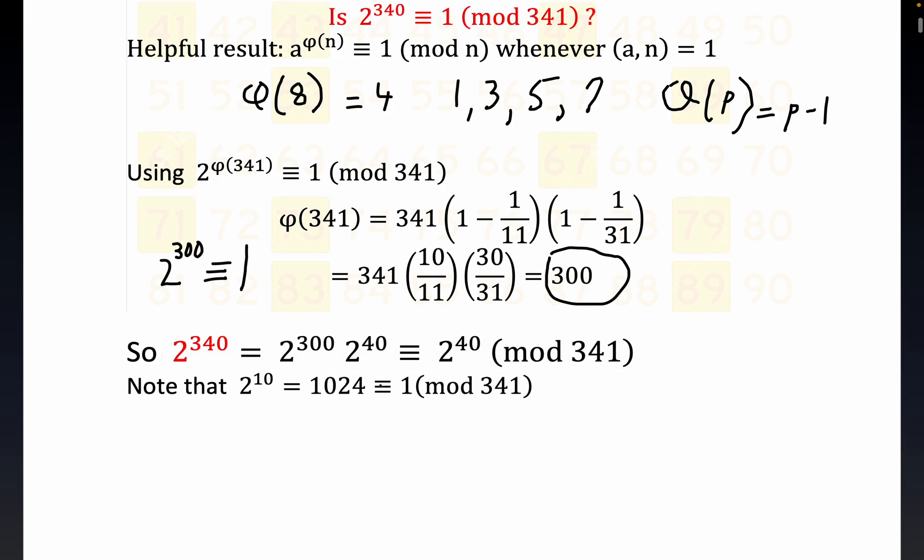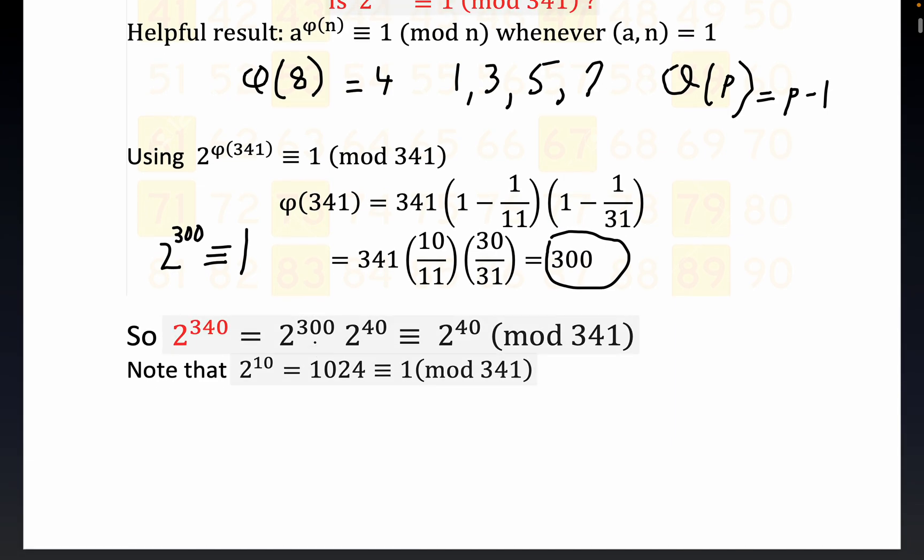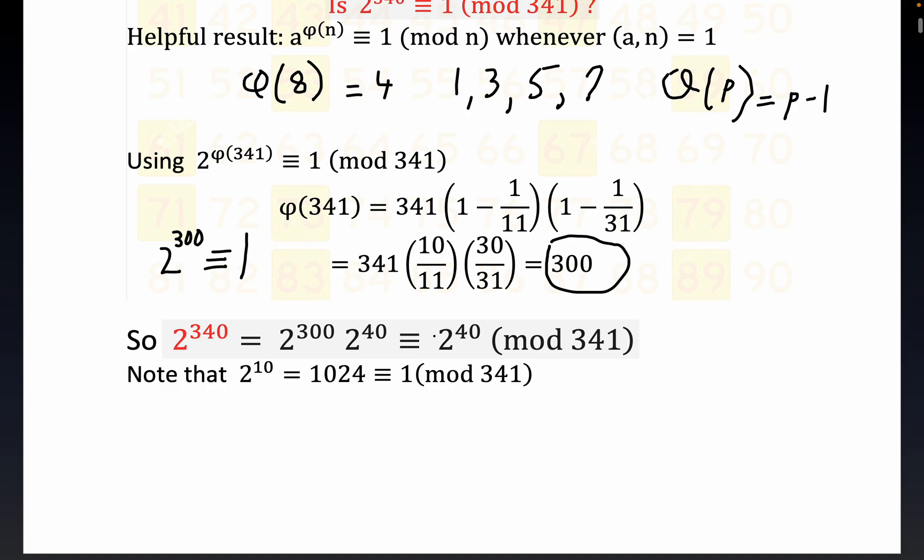So you see, we get to this statement very quickly because 2 to the 300 is 1 in modular arithmetic. So just for the sake of clarity, I'll put a 1 dot there. The 1 is superfluous, but this 2 to the 300 got replaced with 1.